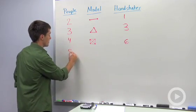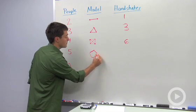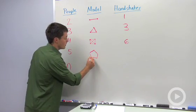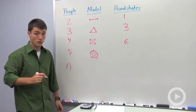We'll do one last one. If you have five people at a party, you're going to have five people, and then you're going to have five more handshakes for a total of ten.